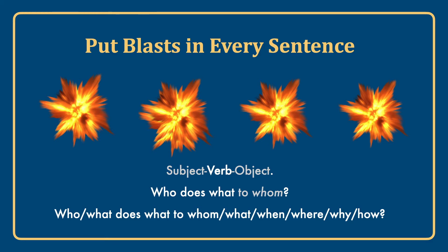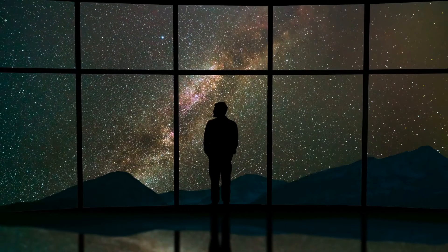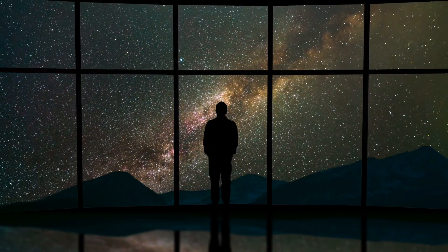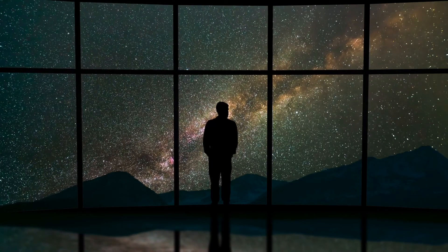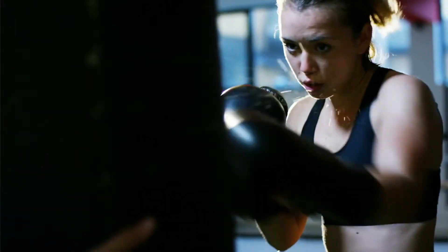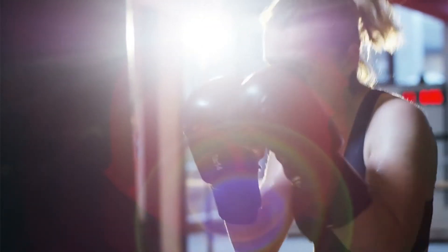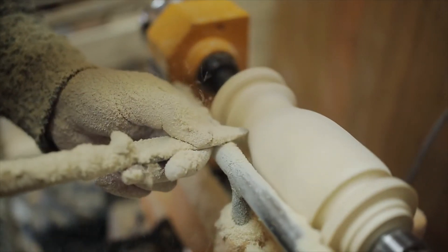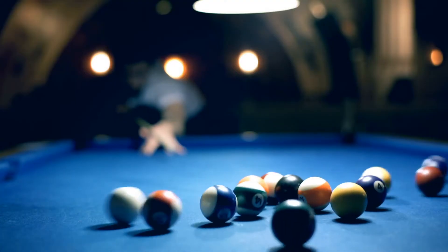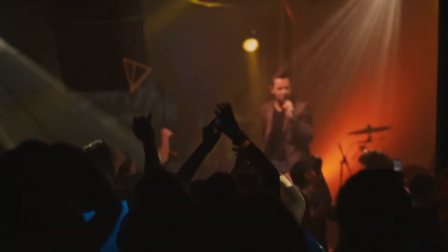There are all kinds of variations — not just who does what, but what does what to whom, what, when, where, why, and how. It's not easy to avoid 'to be' and 'to have' — but we need to use action verbs as much as possible to give energy to every sentence. We need to blast our way through the ideas that we want to express.